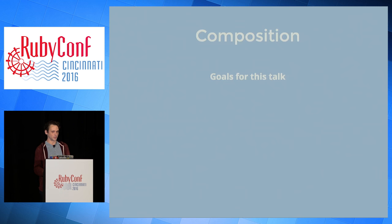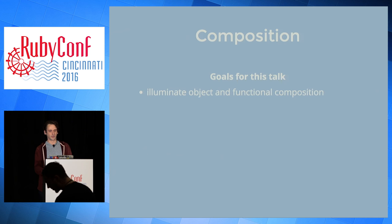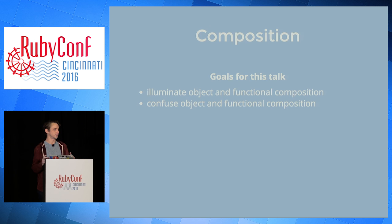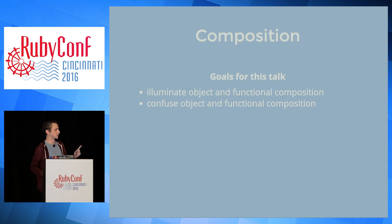At a high level, my goals for this talk are to explain what object and functional composition are. I'll spend a little more time on functional composition, assuming people are less familiar with that area. I also want to intentionally confuse the two a bit. I think object-oriented versus functional is often presented as an either-or, like one's right and one's wrong. I don't believe that. I think these are more similar than they are different — we're just looking at the same thing through different lenses.